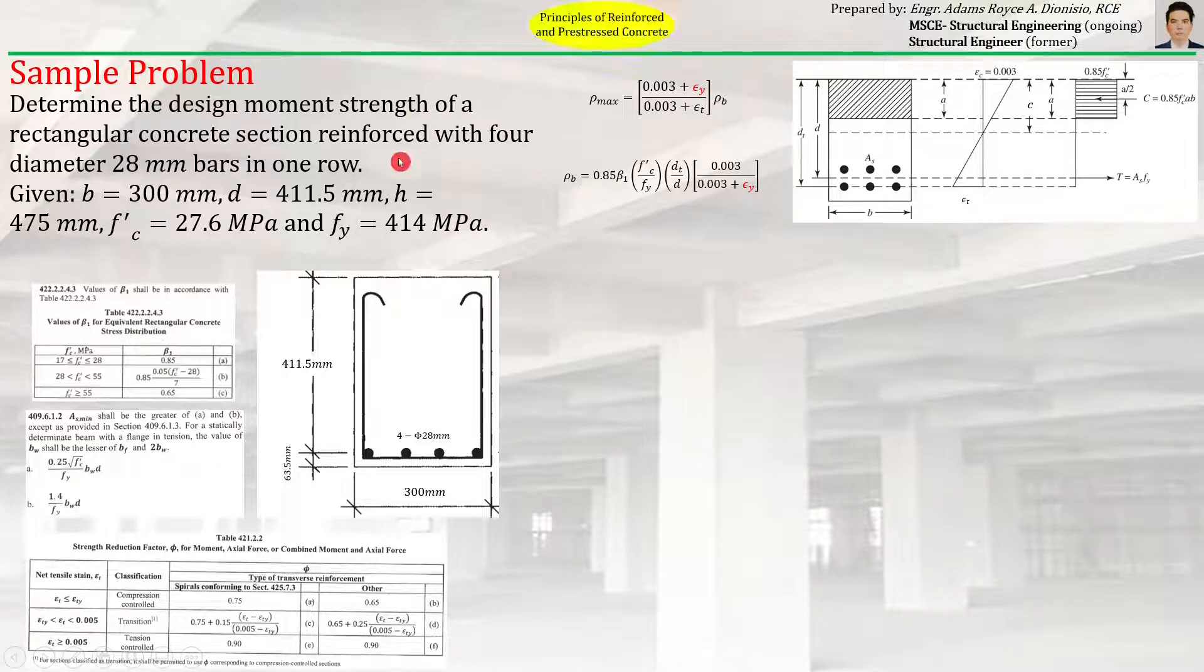So, let's try this sample problem. Determine the design moment strength of a rectangular concrete section reinforced with four diameter 28 mm bars in one row.